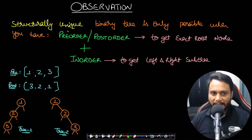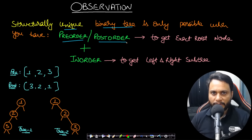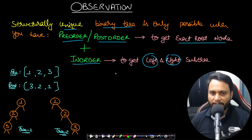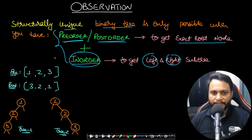Let's look at some observations. If the question was about a structurally unique binary tree, we would need either preorder or postorder to get the exact root node, plus an inorder to determine the left and right partitions. You cannot make a structurally unique binary tree unless you have inorder plus one of preorder or postorder. That is why the problem mentions there may be multiple answers — for a given preorder and postorder you can have multiple valid representations.